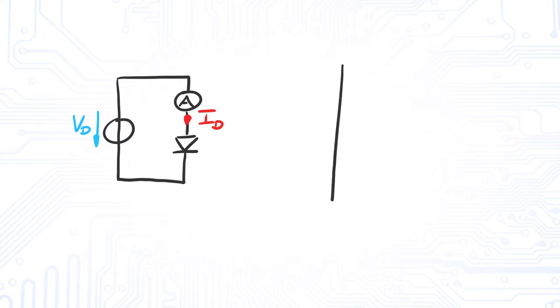This can be seen when we apply a range of voltages to the diode and record the current. If we then plot the current over voltage, we get a curve looking like an exponential function.